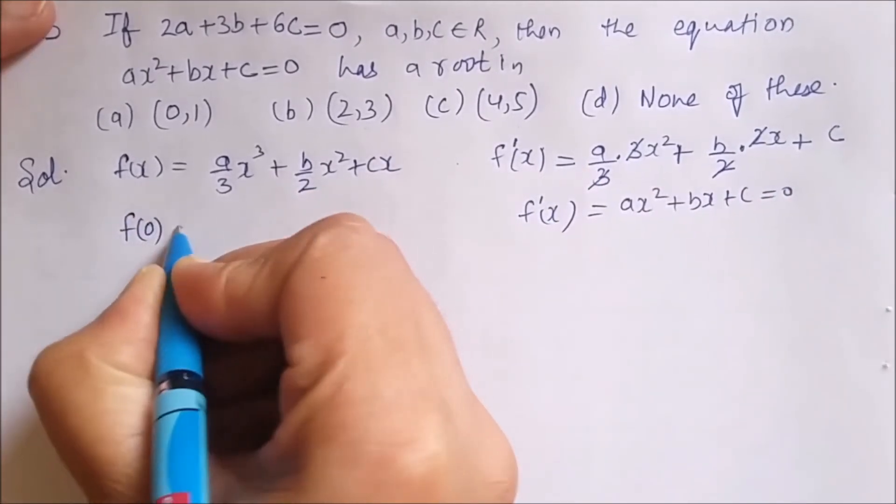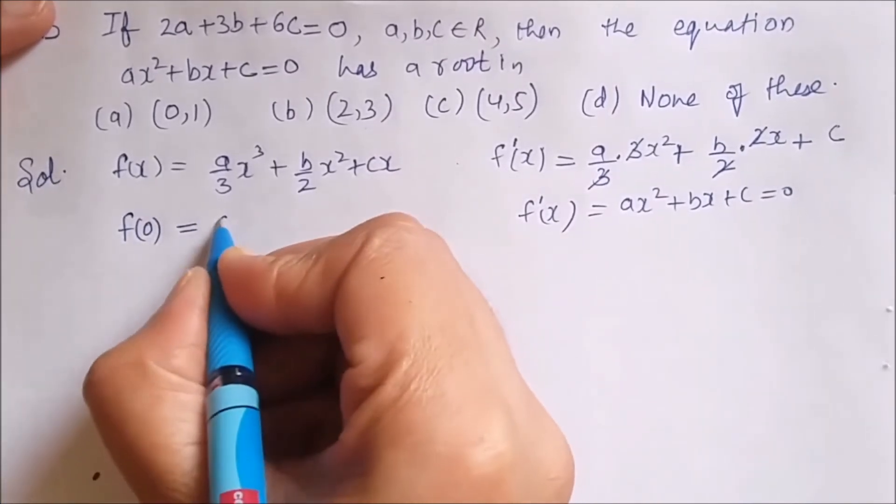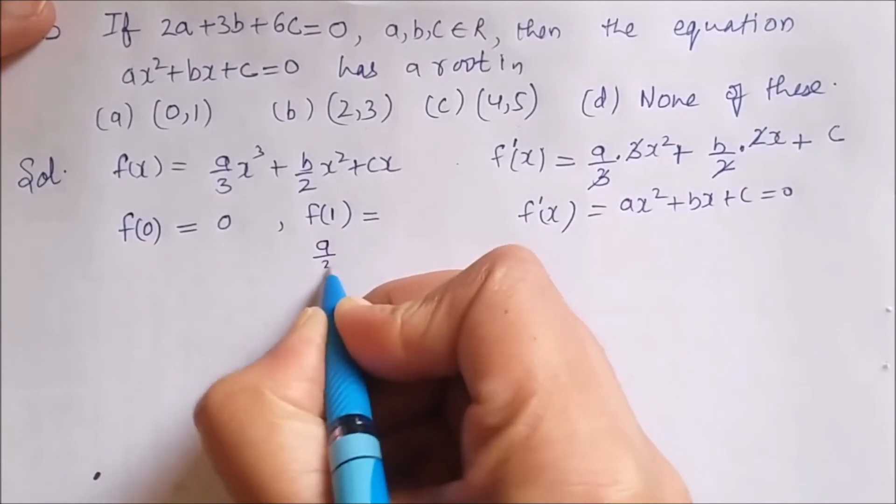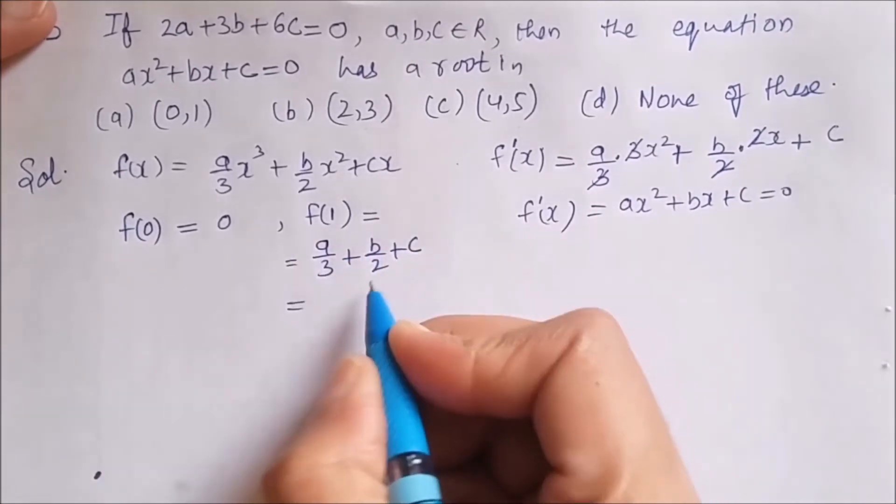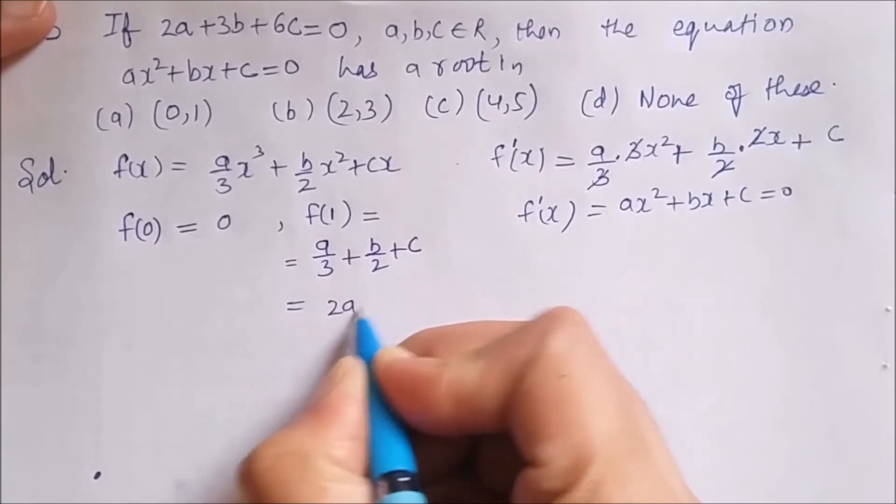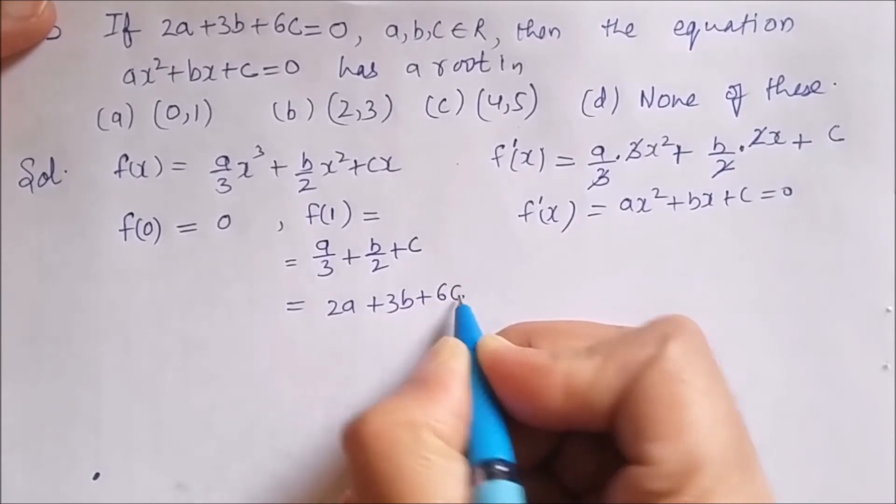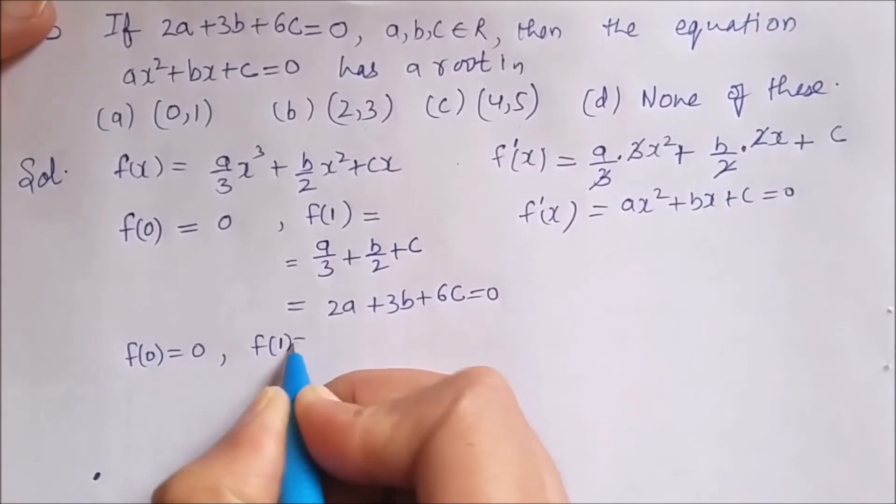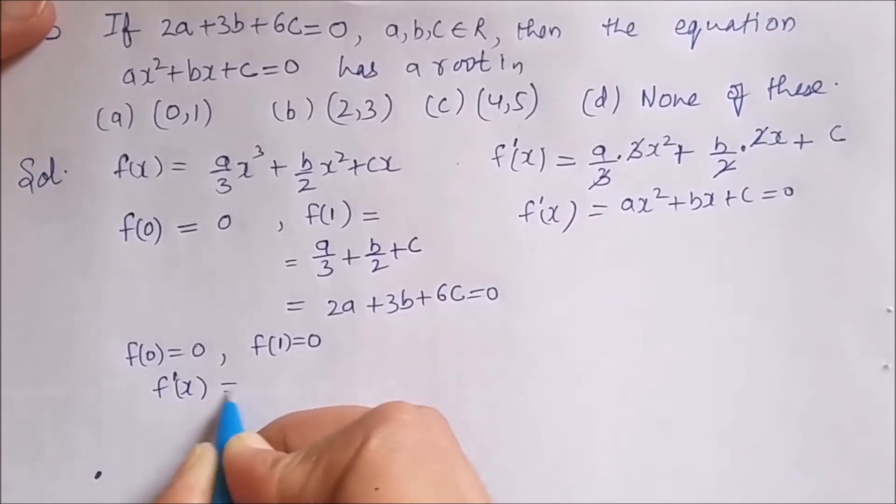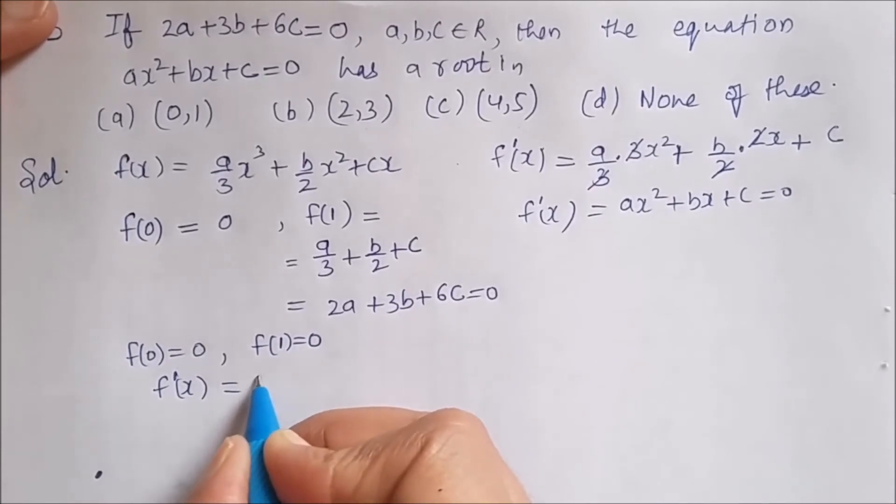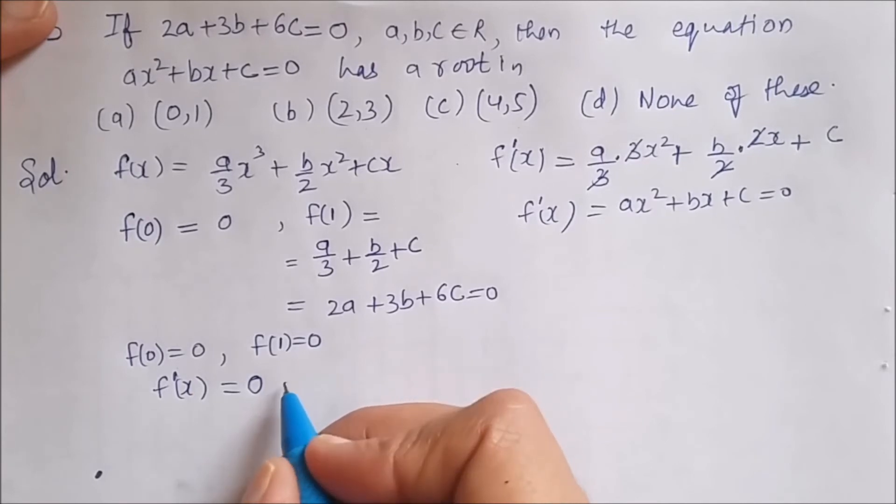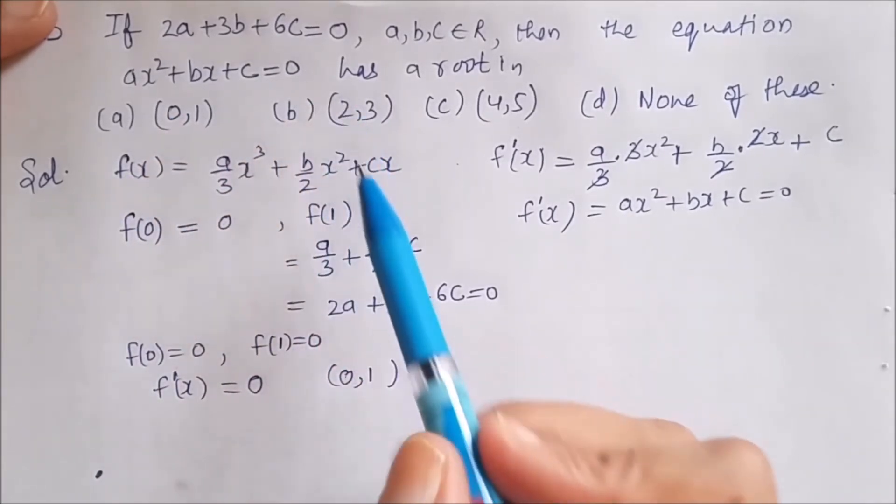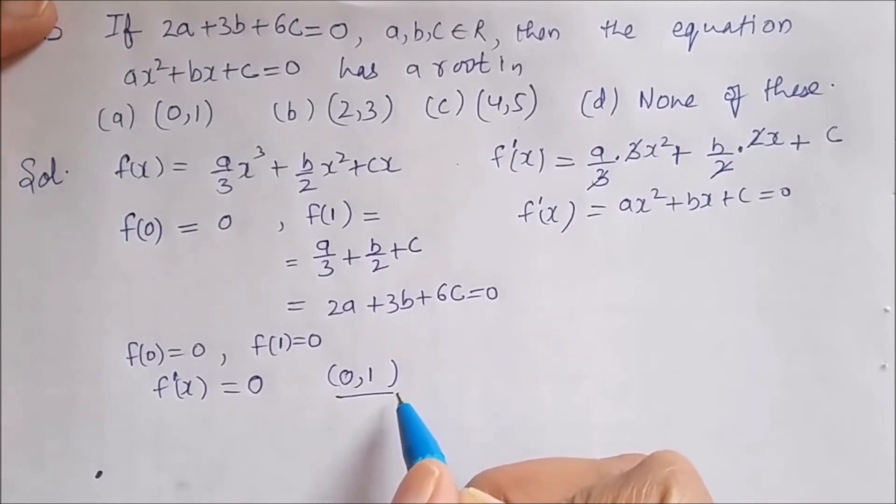Now f(0) will be if I put 0 in place of x this will be a/3 + b/2 + c. And if I multiply this equation by 6, I will get 2a + 3b + 6c. And this is given to be 0. So f(0) = 0. And f(1) = 0. And f'(x) is given here. ax² + bx + c. This is also 0. Therefore, by Rolle's theorem, we can say that the function will have a root in the interval 0 to 1. Or ax² + bx + c = 0 has a root in this interval. Now let us see one more.